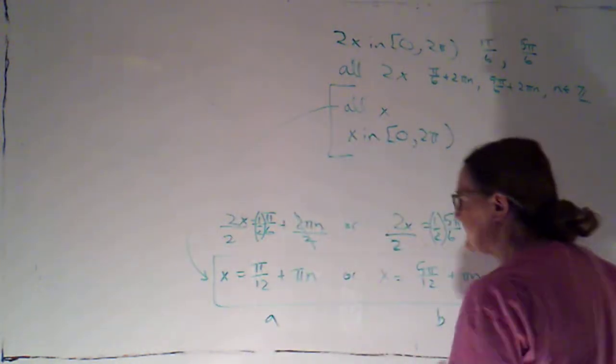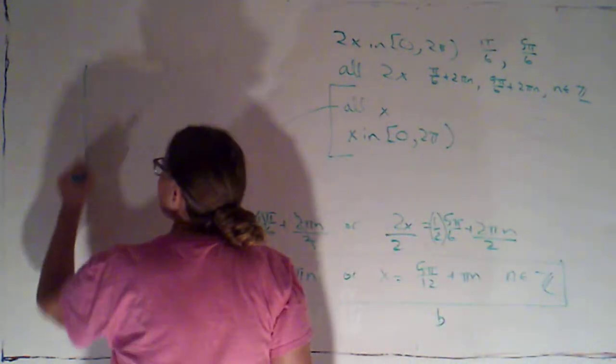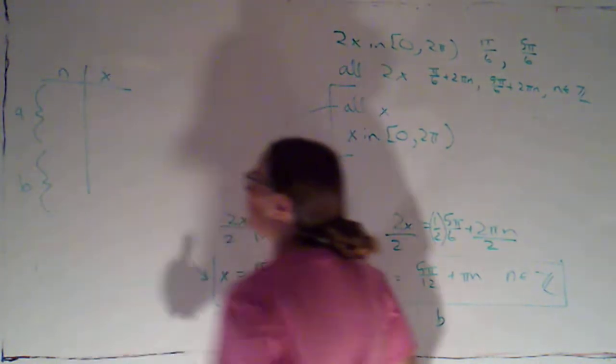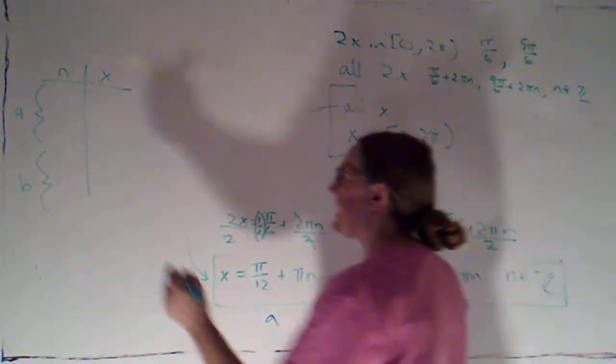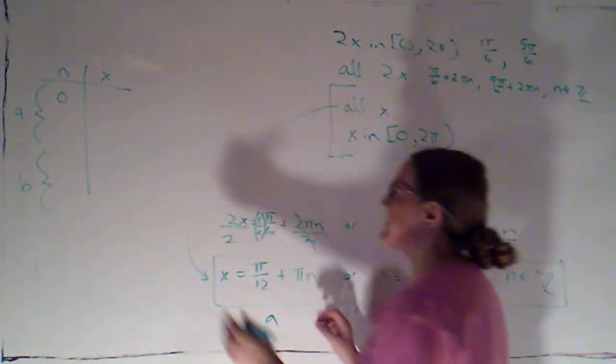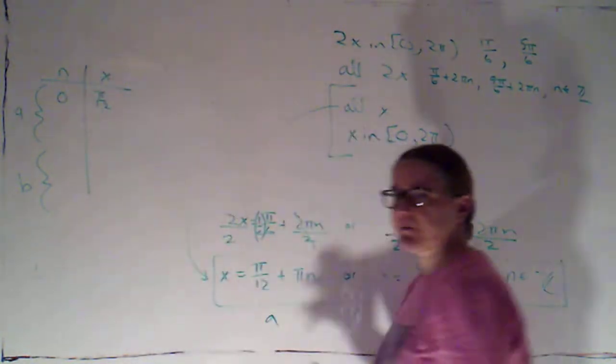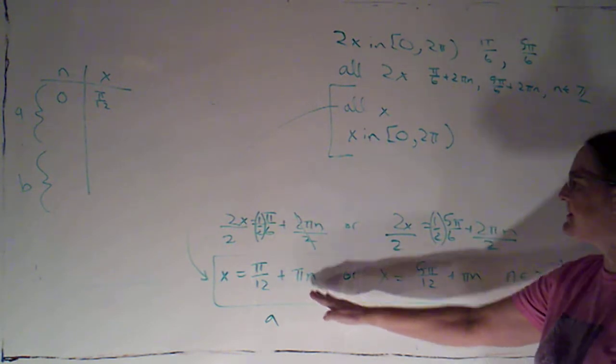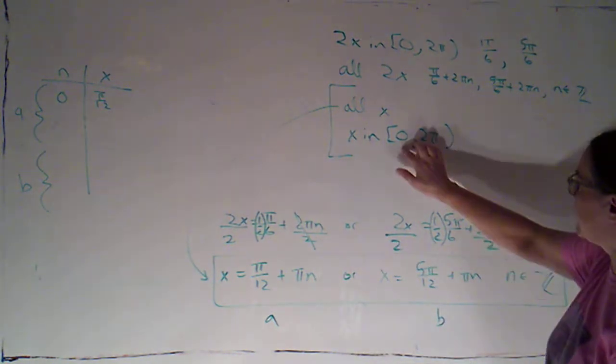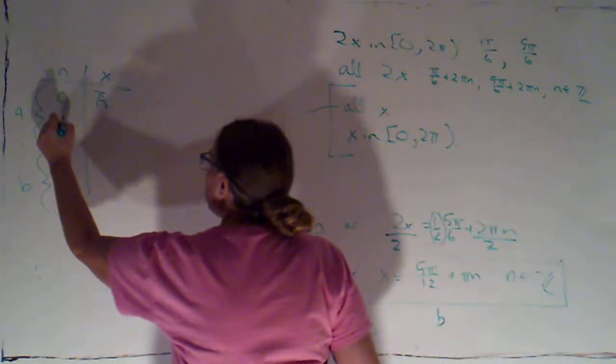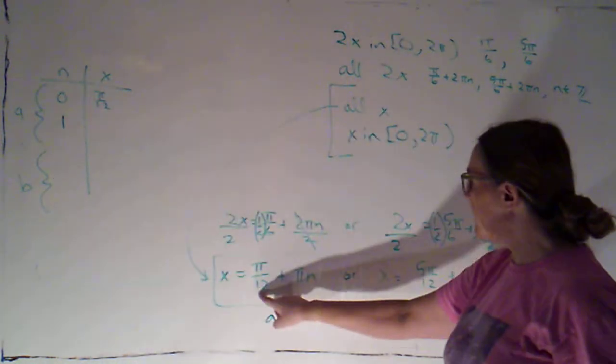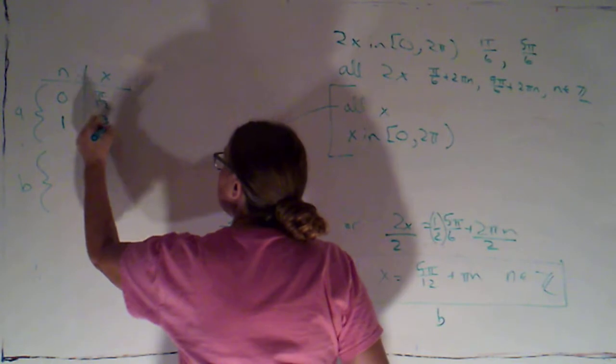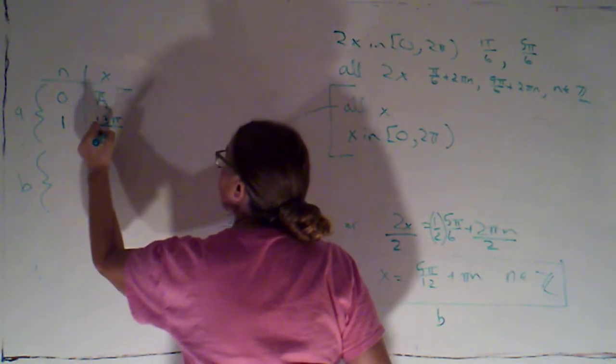Okay, so what I'm going to do is I'm just going to call these guys a's and these guys b's. I kind of like to have a table where I list what n and what x is, although it's not absolutely necessary. For the a's, if n is 0, that's going to give me just pi over 12. Remember, I always pretty much start with 0 because that's going to be the first angle that's in this interval. Then, if I let n be 1, I get pi over 12 plus pi. Now, pi would just be 12 pi over 12. So, that would give me 13 pi over 12.